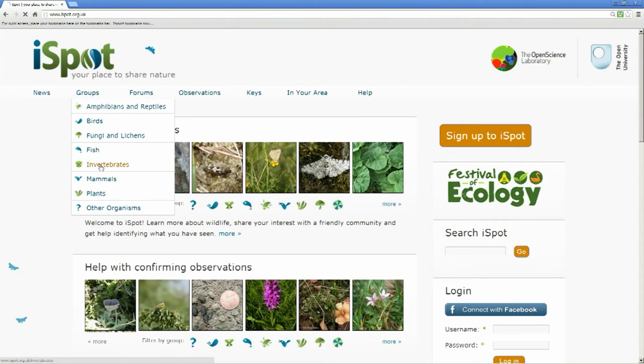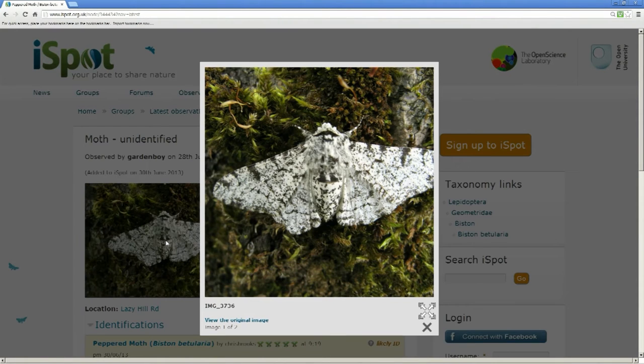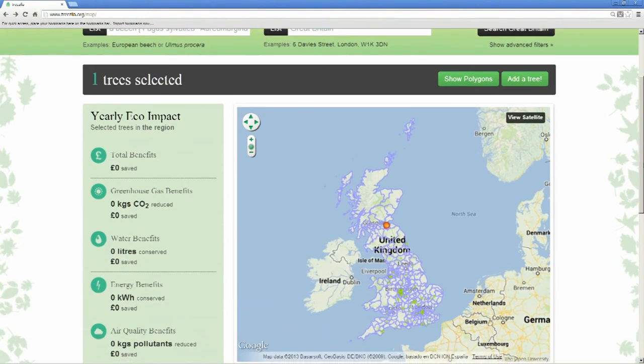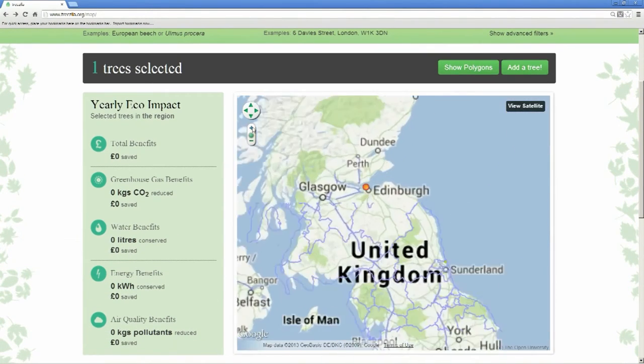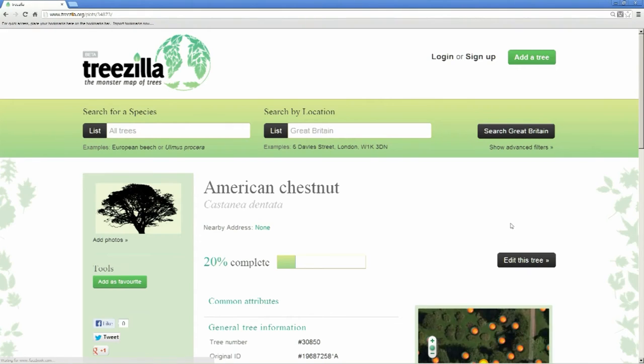Citizen Science involves distributed data gathering, and invites members of the public to get involved. iSpot helps anyone to identify anything in nature, and our TreeZilla application is a nationwide tree survey to map all of Britain's trees and measure their environmental benefits.